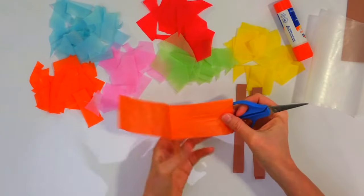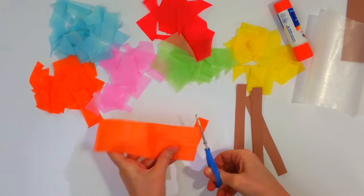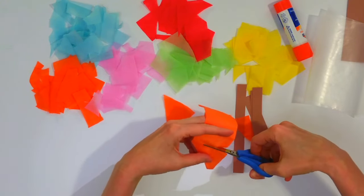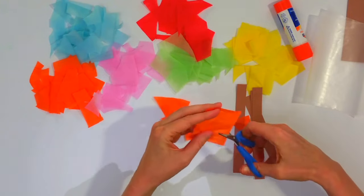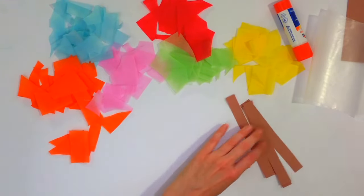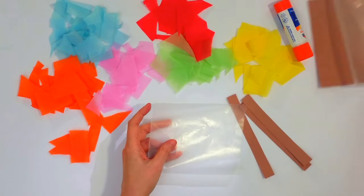Once you have them all cut out, you're going to cut out your pieces of tissue paper. I have got a bunch already, in fact these were just left over from another craft, so I'm showing you it doesn't matter the size, the shape, it can be random.